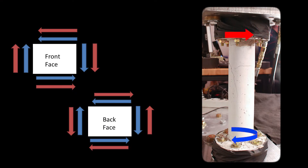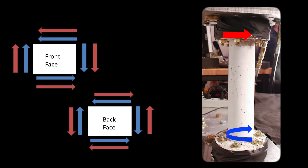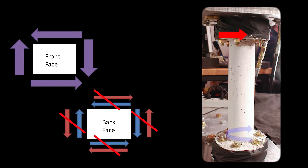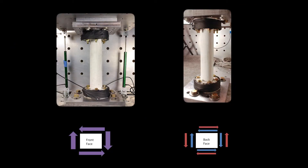When a member is subjected to a combination of shear and torsional loads, the stresses due to shear and torsion will be additive on one face while counteracting each other on the opposite face. It is expected that the first crack will appear on the side of the specimen where stresses are additive.